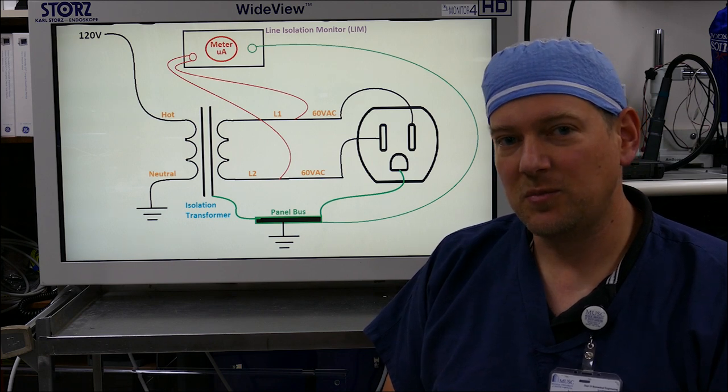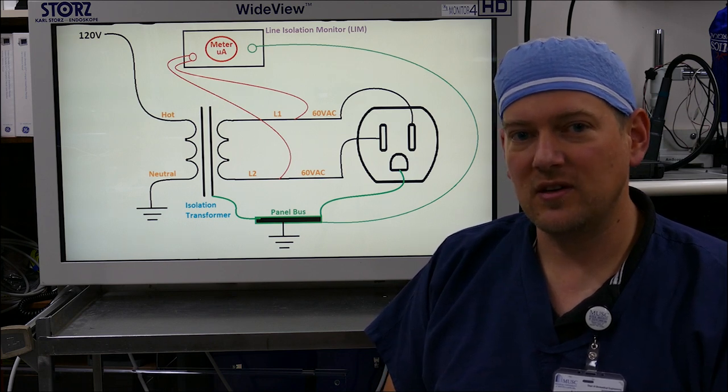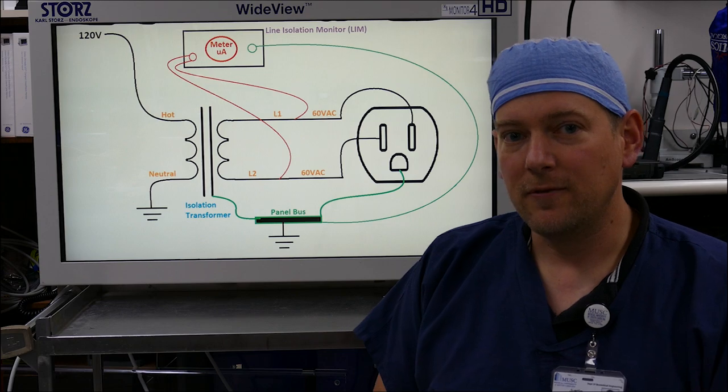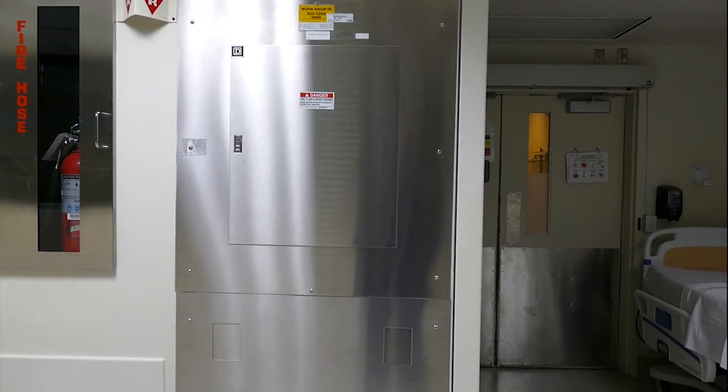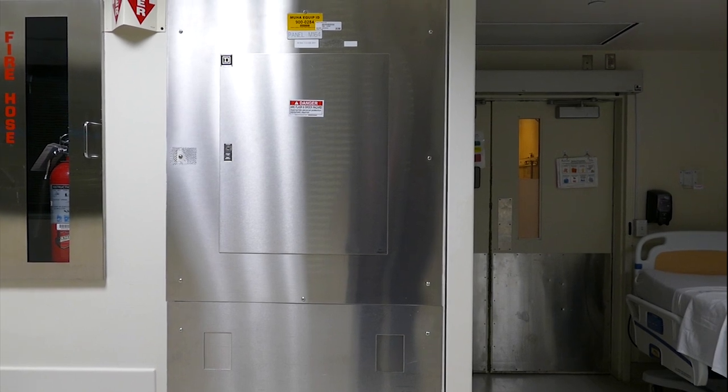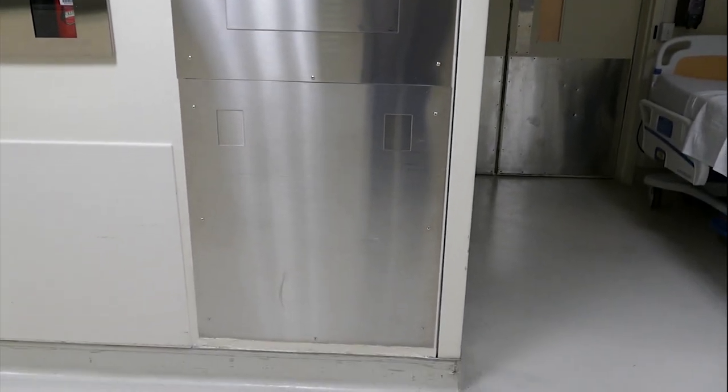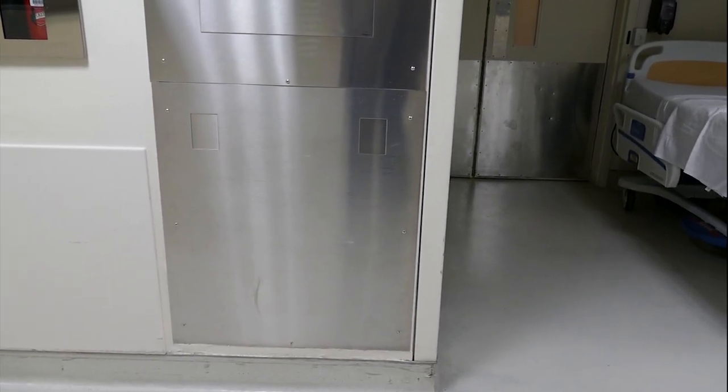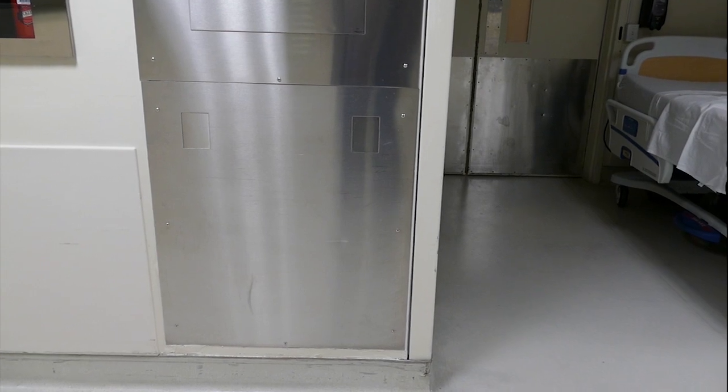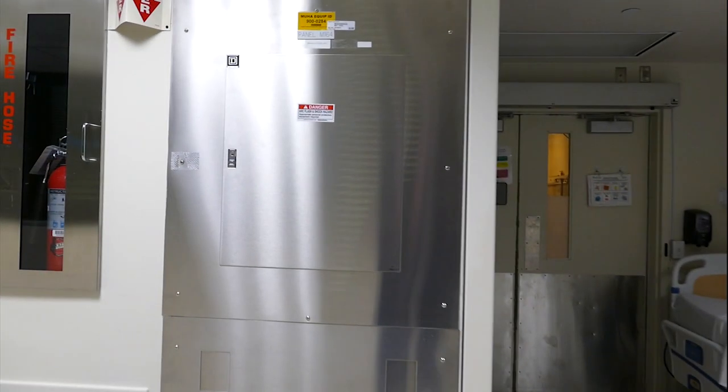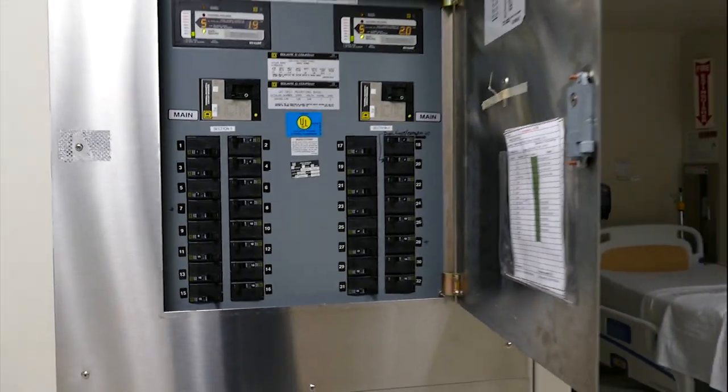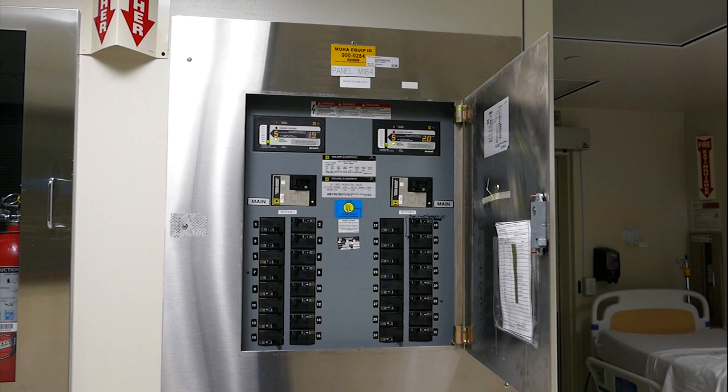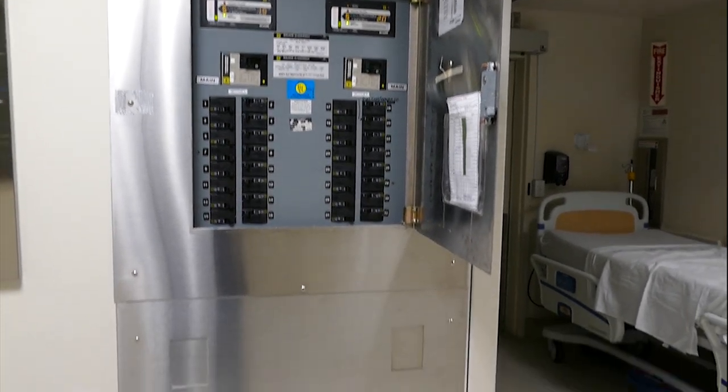Line isolation systems protect the users and the patients inside operating rooms from electric shock. This is a LIM panel, a line isolation monitor panel. Down here is your line isolation transformer. There actually are two transformers because behind the panel you can see we have two separate panels.